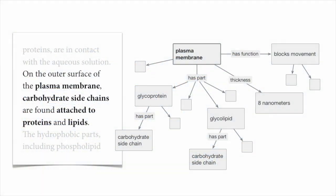Let's see how this sentence is represented. On the outer surface of the plasma membrane, carbohydrate side chains are found attached to proteins and lipids.